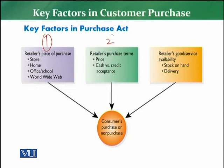Ab hum move karte hain second key factor ki taraf — jo hai retailers ki purchase terms. Customer ke purchase decision ko jo doosri baat sab se zyada effect karti hai woh yeh hai ke us product ki jo woh buy karne ja raha hai, woh price kya hai us particular retailer ke oopar. Jis tarike se Walmart claim karta hai ke everyday they have the low prices — EDLP ka concept — which means ke woh customer ko ensure karta hai ke jo bhi prices aap mujhse lene ke liye ja rahe hain, they are the lowest in the town.